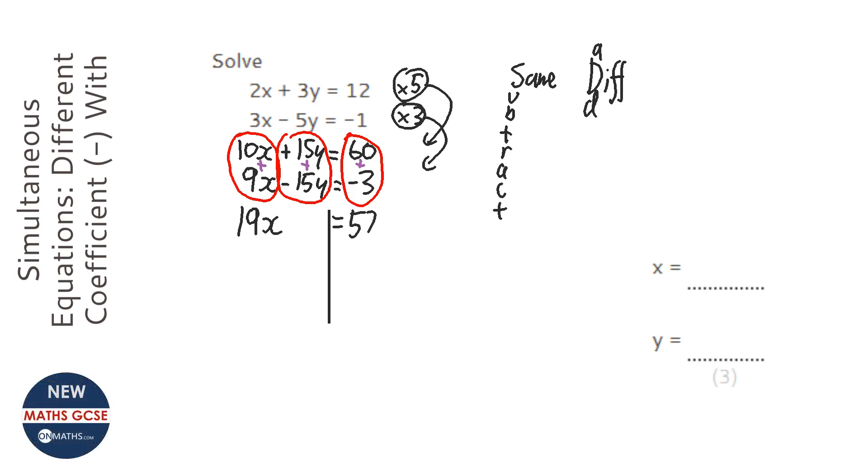And then we're going to put our lines going downwards. And we're going to divide both sides by 19 here.